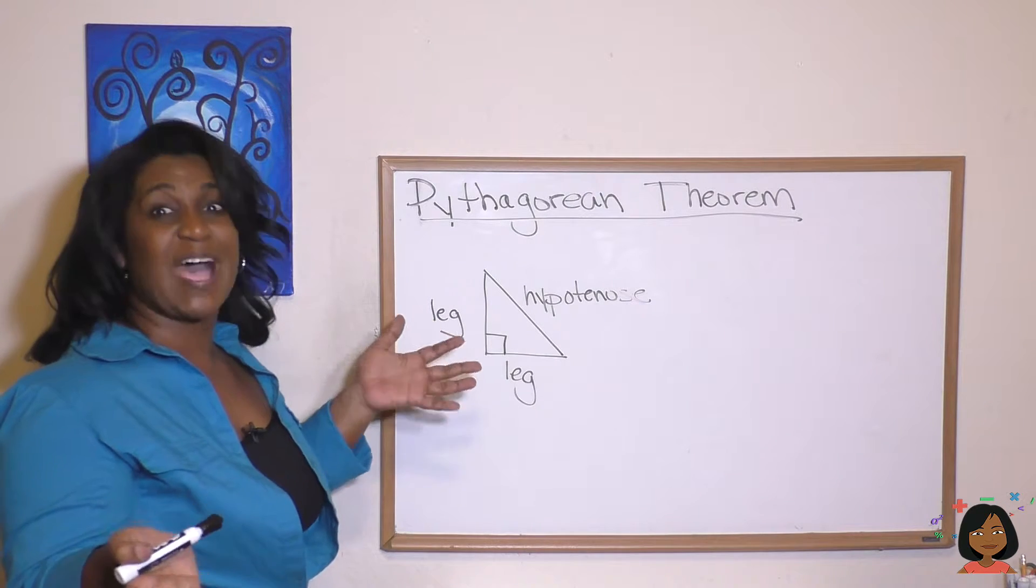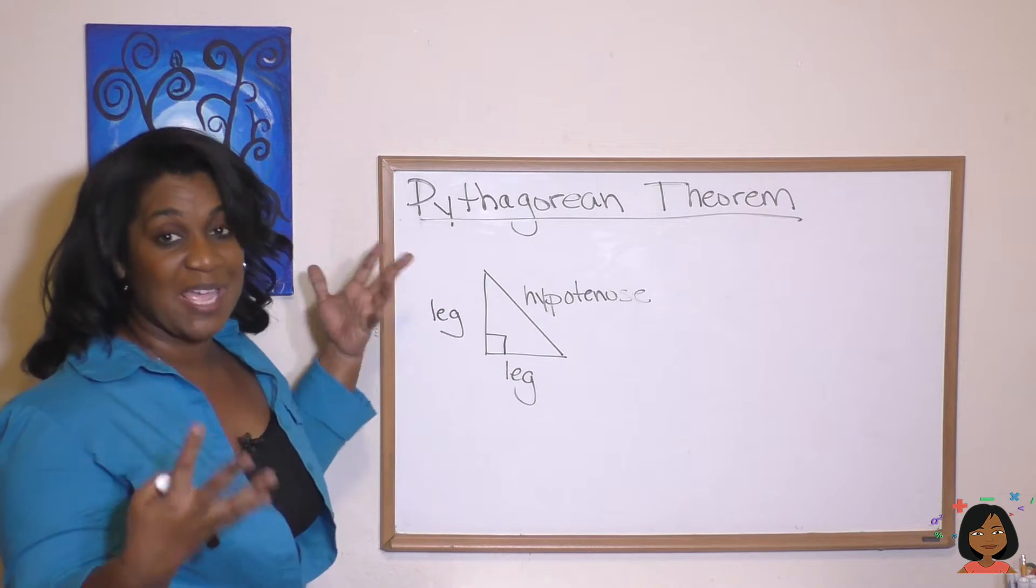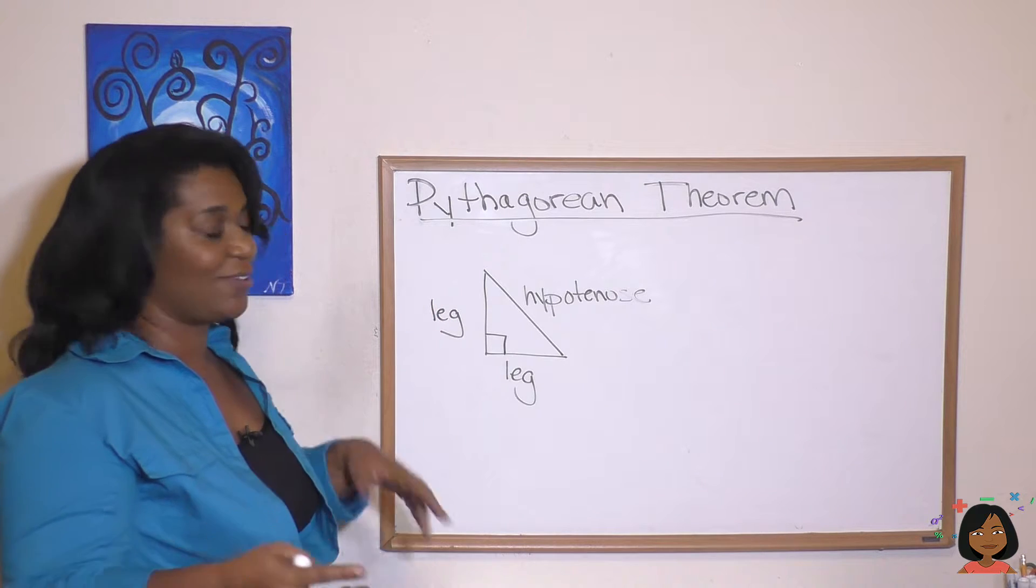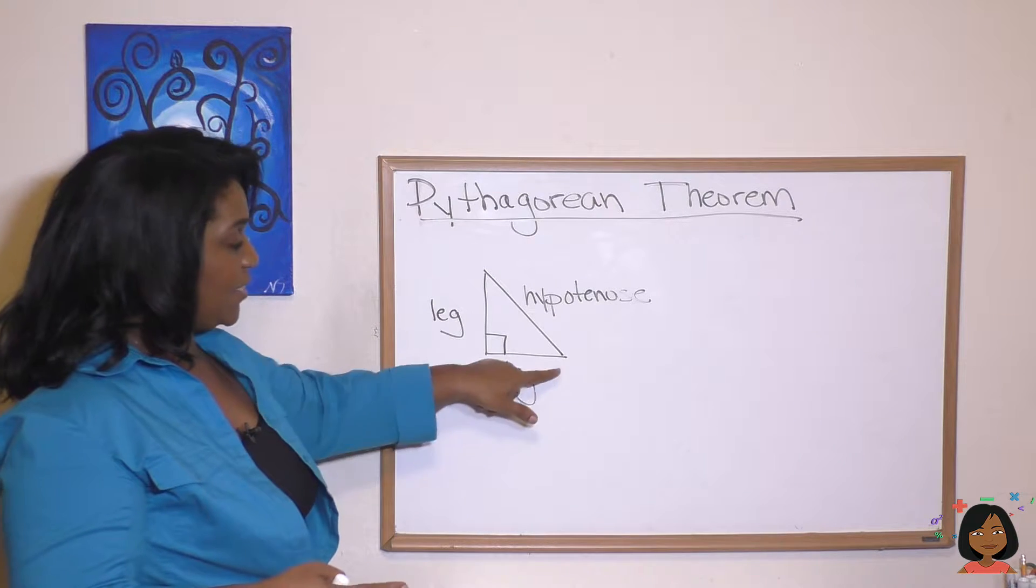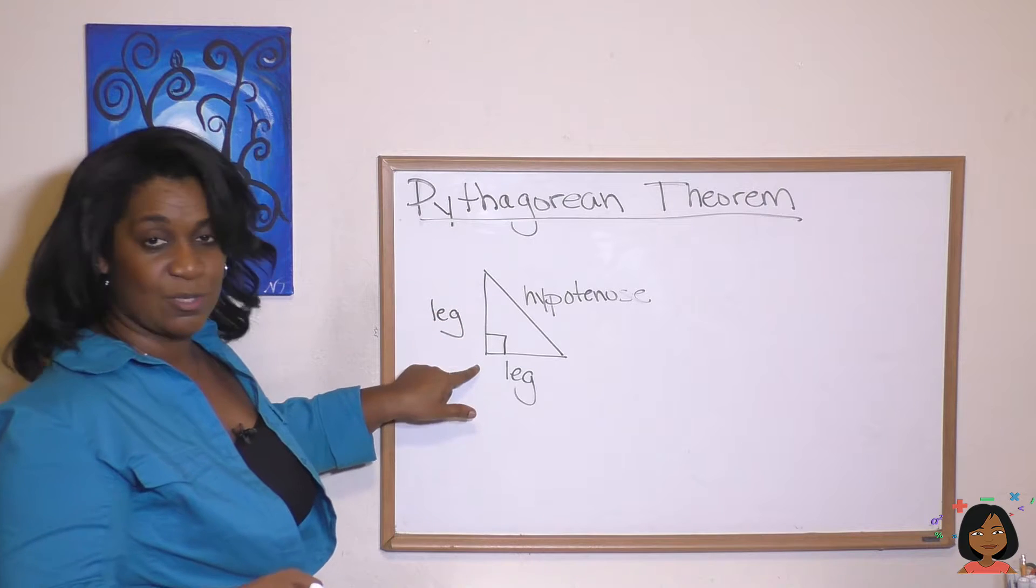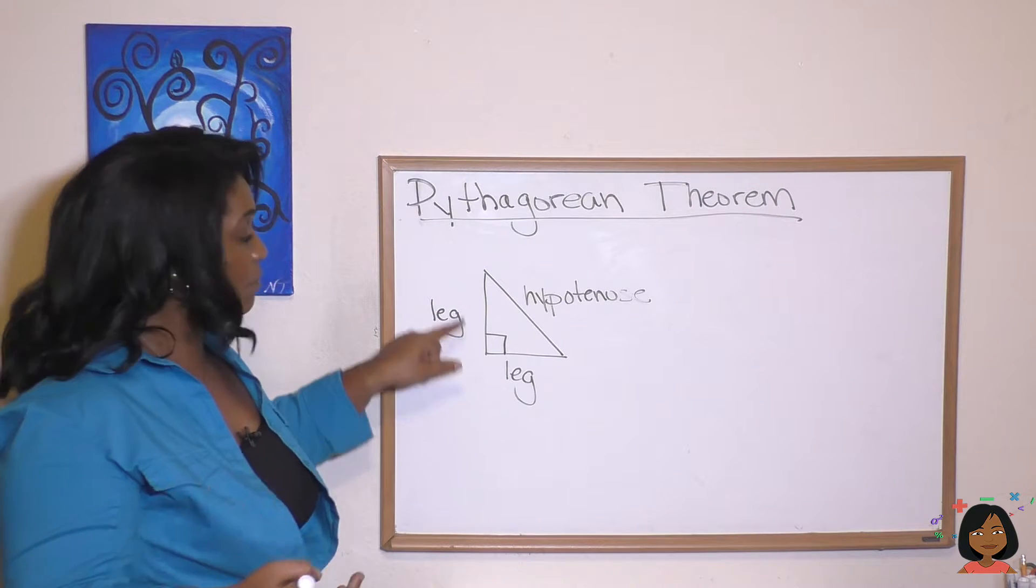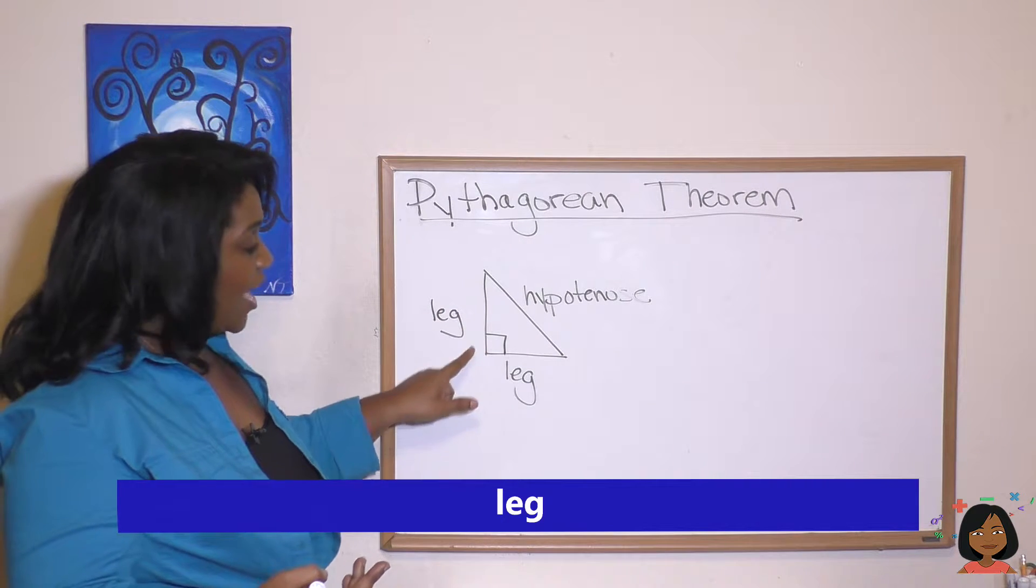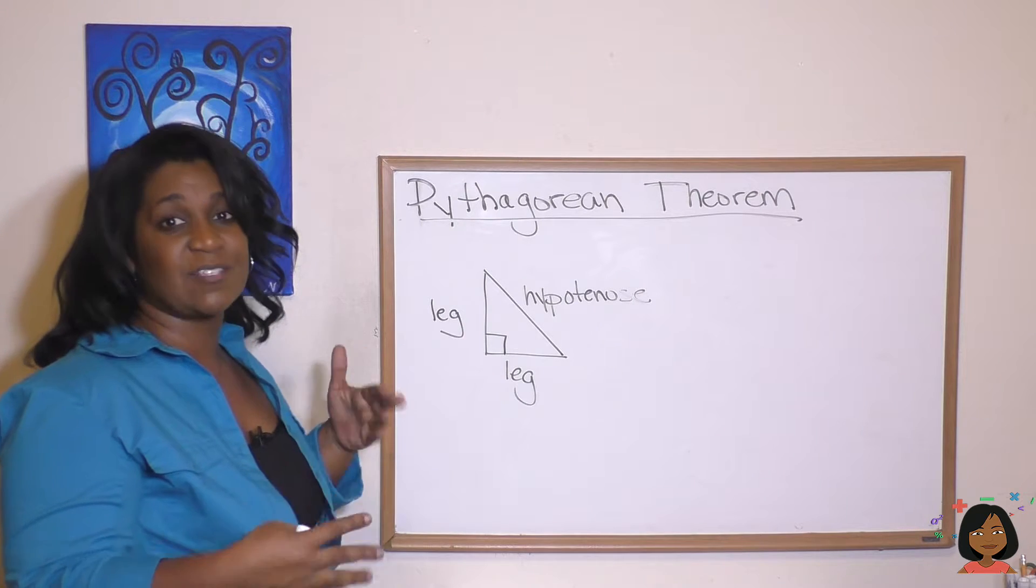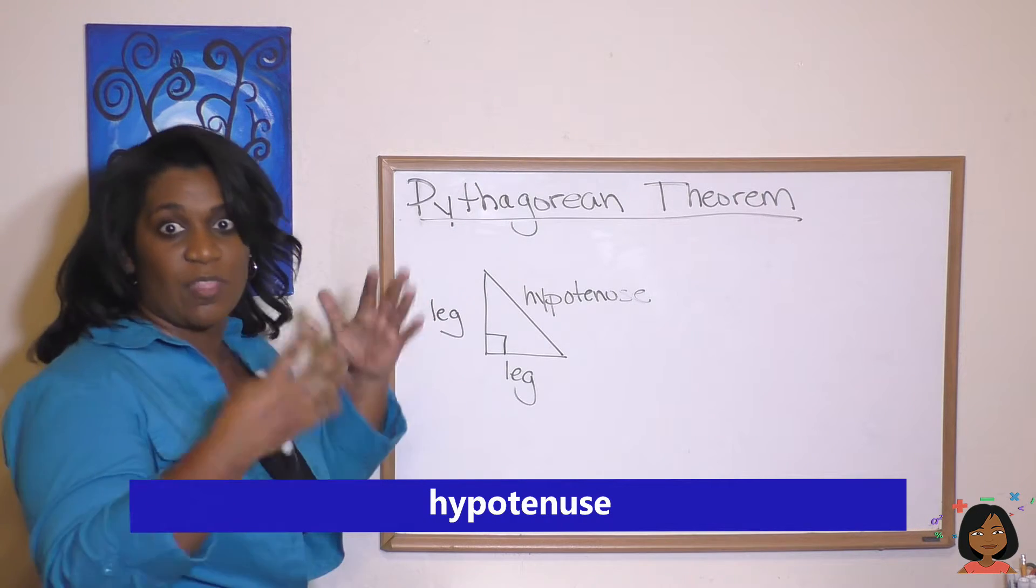I think it's about time I finally introduce to you the proper names of the sides of a right triangle. We will call both of these sides that are close to the right angle the leg, and the side that's opposite that right angle is called the hypotenuse, which is the longest side.